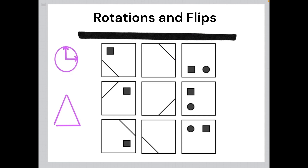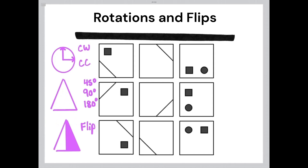Rotations and flips are very common logic patterns. Usually the entire element will rotate in the same direction, but it is possible for only certain parts of the element to rotate, or for different parts to rotate in two different ways. Elements can either be rotated clockwise or counterclockwise. Clockwise is the way clock hands naturally move — starting from the top, moving right, down, and around.